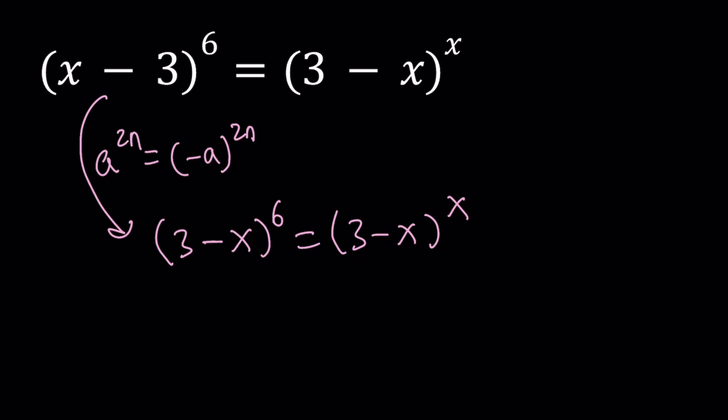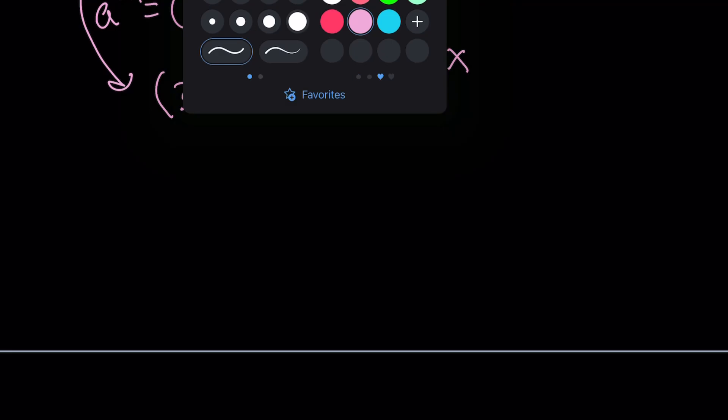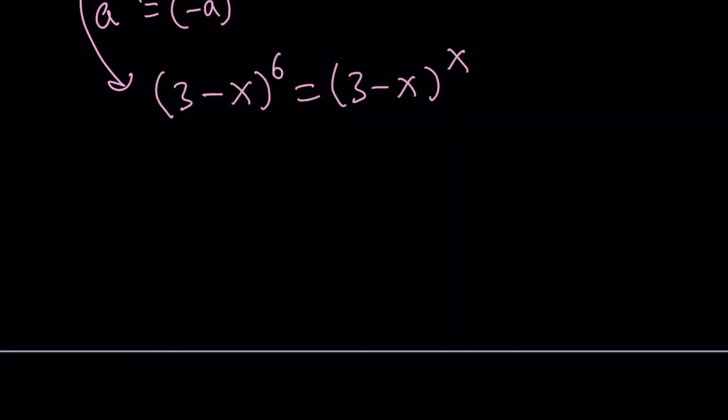The exponents will take care of that, but let's just go ahead and analyze this in a general sense. What happens if you have something like a to the power b equals a to the power c? What are some of the conclusions you can get from here?